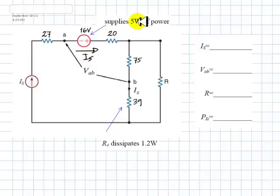Now, 5W is 16 times Is. That means that Is is 5W divided by 16V, which is 0.31A. And that is the first answer to our problem.